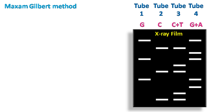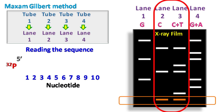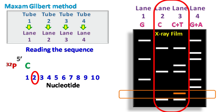Since the smallest fragments are at the bottom of the gel, we read the gel from the bottom upward. Lane 2 and lane 3 represent C and C+T respectively. Both lanes have bands at the first position, so the first nucleotide is C. Next, lane 3 has a single band representing C+T, but lane 2 representing C has no band, so the second nucleotide is T.